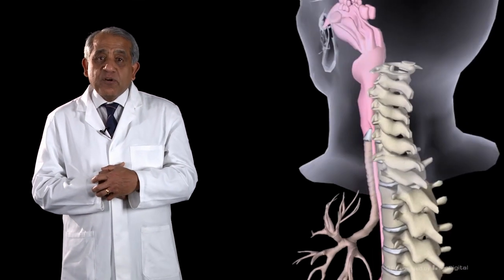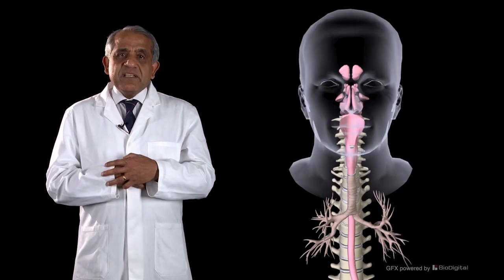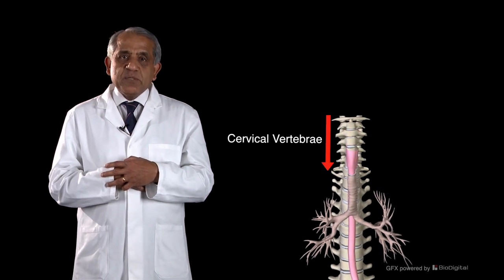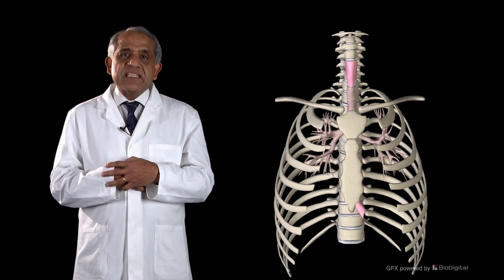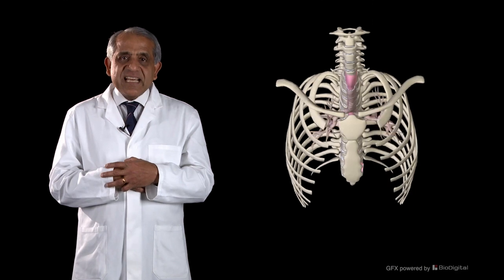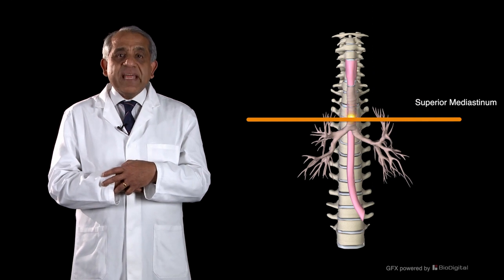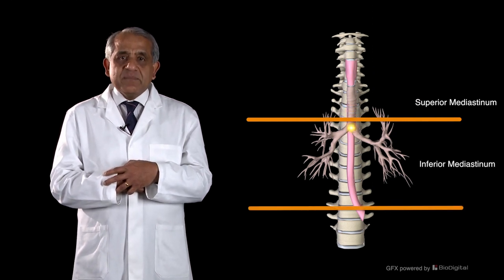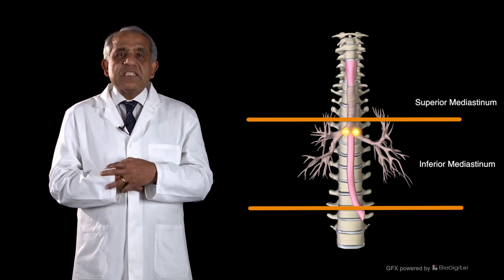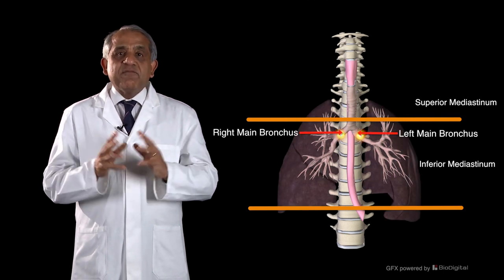Let's now consider the tracheobronchial tree in detail. From its commencement, the trachea runs down more or less in the midline, in front of the cervical vertebrae, and enters the superior mediastinum through the thoracic inlet. It runs down the superior mediastinum and crosses into the inferior mediastinum, where a short distance in, the trachea ends by dividing into two bronchi — right and left — one for each lung.